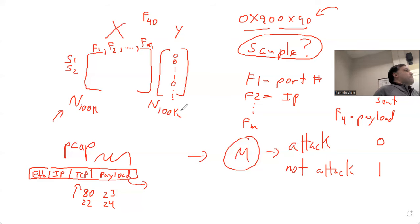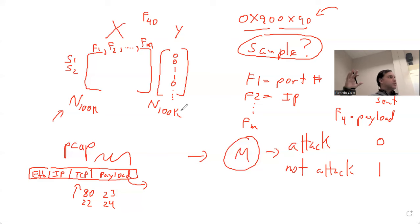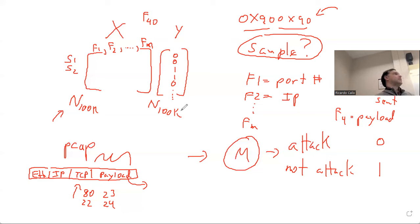Would you get diminishing returns after some number of samples? That's a good question. If we get to a million, do we need 10 million? The consensus currently, at least with GPTs and large language models - transformers - is that bigger is better. More data, more computing power, more architecture, more parameters equals better models. So more data means bigger models. That's what people have observed, at least with large language models. For some smaller models, you may get to a point where you have enough data.